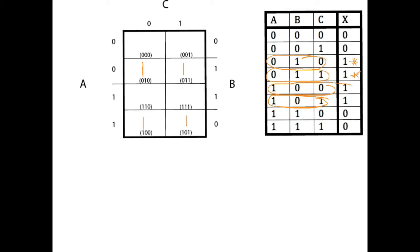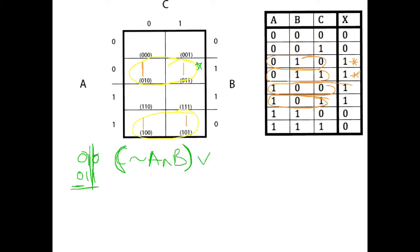Now I can start to see a pattern, so I'm going to highlight that pattern — I've got a pair and another pair. Let's start with this one over here. We've got 0, 1, 0 and 0, 1, 1. I can see that A and B are making a difference here but C isn't. So for the first part, it's NOT A AND B. And we're going to OR that together with whatever the next bit is. The next one: we've got 1, 0, 0 and 1, 0, 1 — again, C is not really making a difference. It's just A and B, and this one is A AND NOT B.